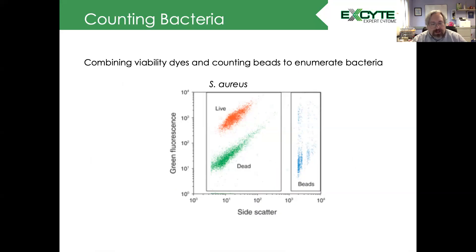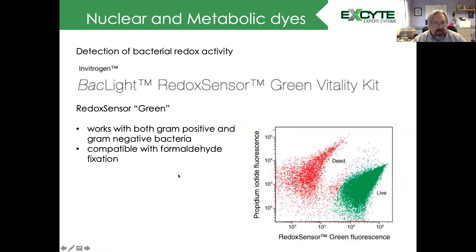In addition to looking at nuclear DNA measurements, we can look at viability by redox activity using Redox Sensor Green. This is a nice compound because it works on both gram-positive and gram-negative bacteria, and it is compatible with formaldehyde fixation. So here we can identify our live cells from our dead cells.